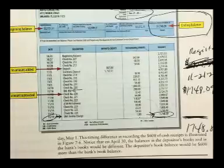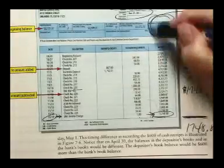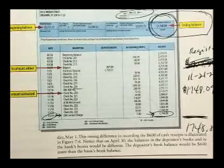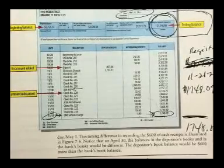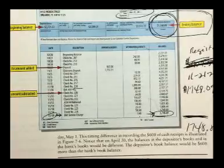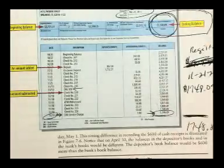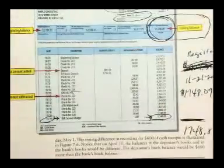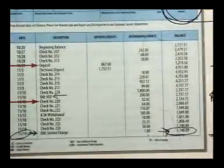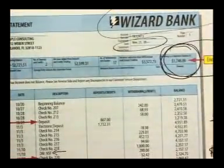Chances are our balance at the end of the month is not going to be $1,748.09. Why not? If neither I nor the bank made any mistakes, why would my balance on November 21st, 2021 be different from the bank's balance on the same day?